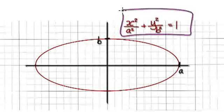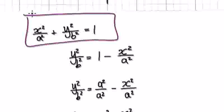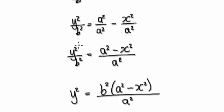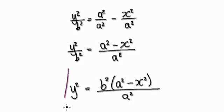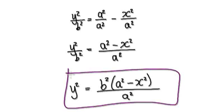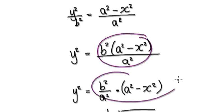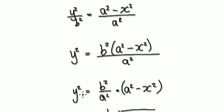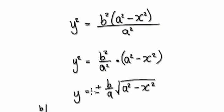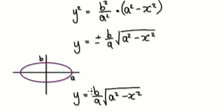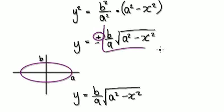Start out with your equation — this is your equation here. Rearrange it so that y is the subject. You would get to this stage here, and then rewrite this as this. Then square root both sides, and the equation of the ellipse can be written as this. So it can be the positive version of this and the negative version of this.